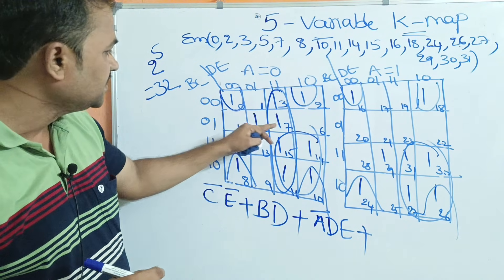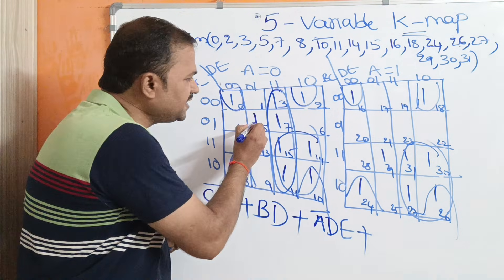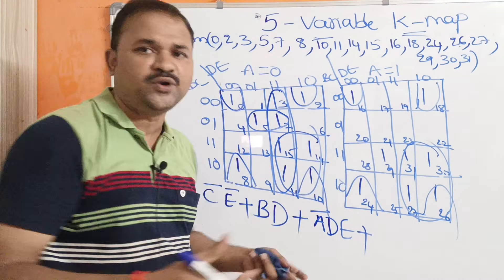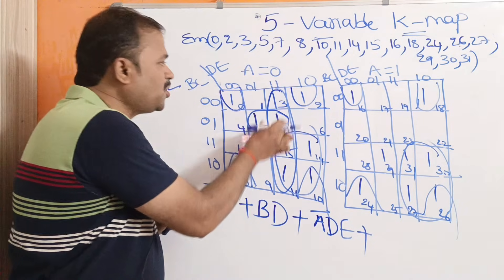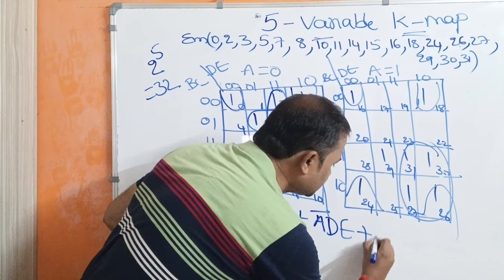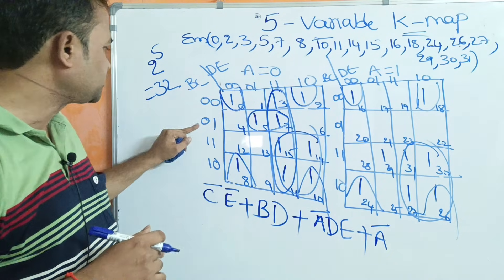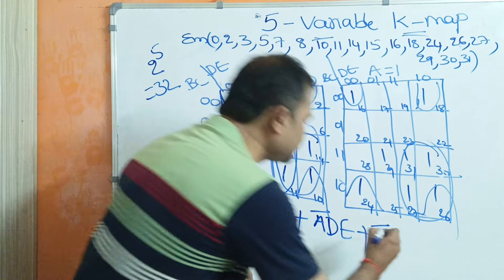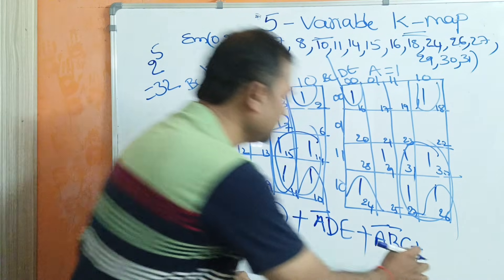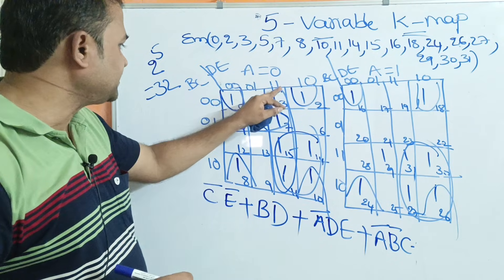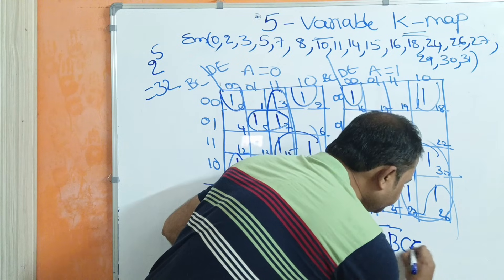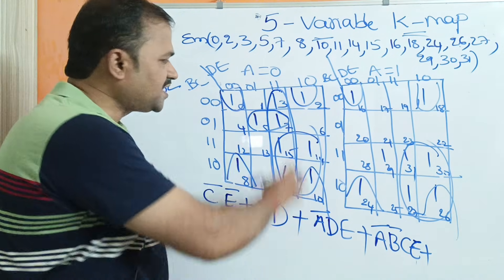Next we need to cover this remaining cell. The only way to cover it is by merging these two cells as a group. But at this location in the second map we don't have any ones, so this group belongs to only this corner of the first map. A value is 0, so we write Ā. The combination is 0,1 for BC meaning B̄C, plus the combination 0,1,1,1 — the second one being common is E. So we get the minterm ĀB̄CE.